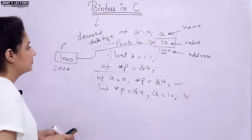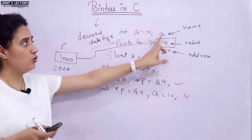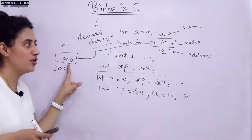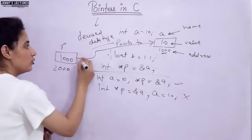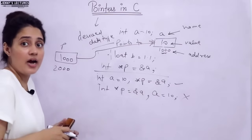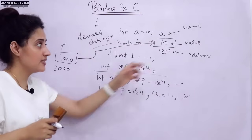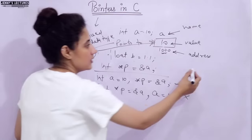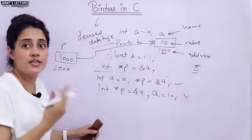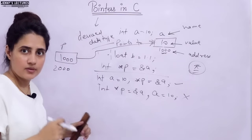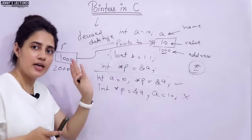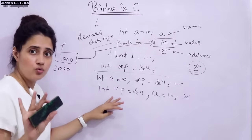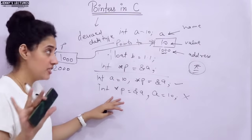Now, we have two ways to print the value of a. You can directly print it using printf with %d and a. Or you can also print the value of a using this pointer, because this pointer is pointing to a. To do that, we have to use a special operator called the dereferencing operator, also called the indirection operator — the star (*). We will discuss that in the next video with a proper example, and I will show you the program on my laptop.